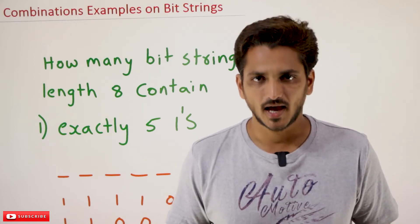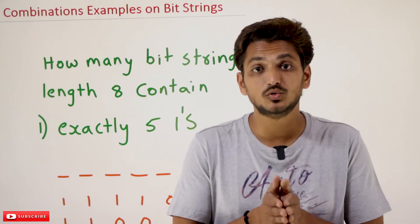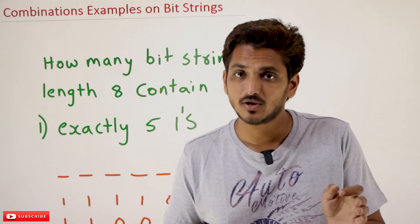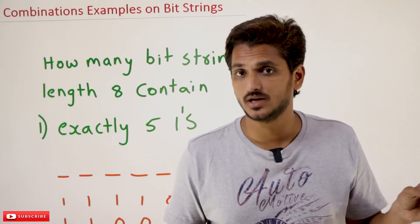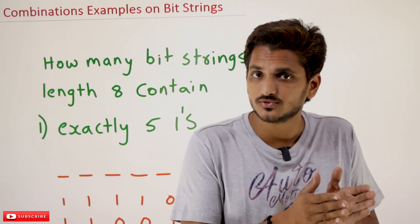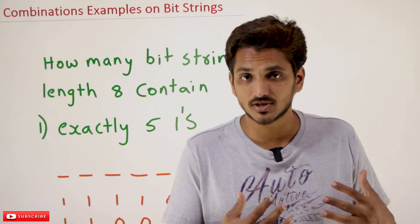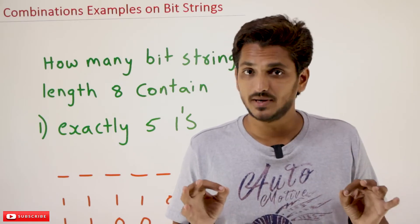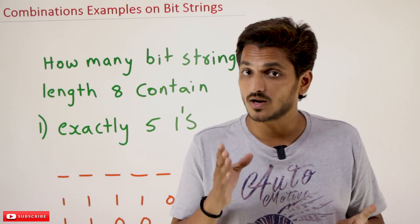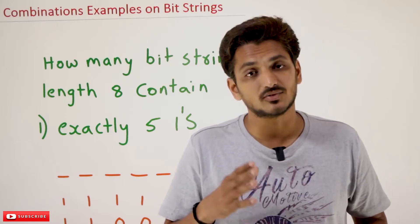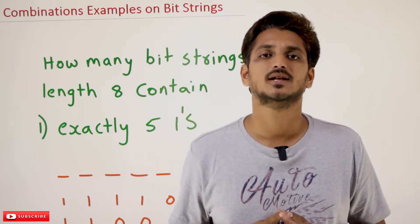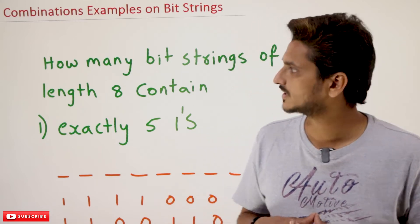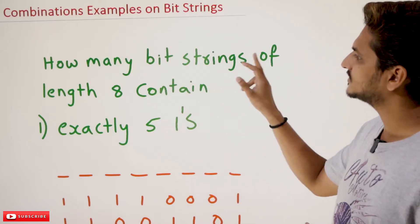Hi, welcome to Learning Monkey. I am Raghur. In this class we do some practice examples on combinations — specifically examples on bit strings. In our last class we clearly discussed the combinations formula, please watch that class and come back here. This is a continuation class. Our explanation is completely based on the assumption that you already have basic knowledge from previous classes. The link for the playlist is provided in the description below.